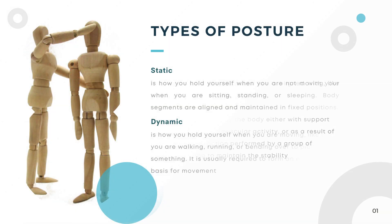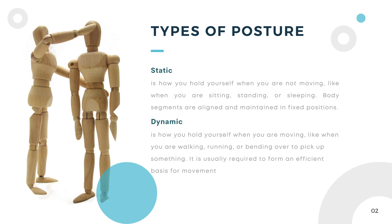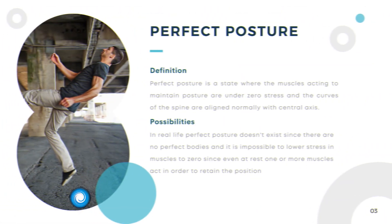Posture can be assumed in any position: sitting, standing, or even during movement. This takes us to our next topic — types of posture. Posture is of two types: static and dynamic. Static posture is how you hold yourself when you are not moving, like when you are sitting, standing, or sleeping — body segments are aligned and maintained in fixed positions. Dynamic posture is how you hold yourself when you are moving, like when you are walking, running, or bending over to pick up something. It is usually required to form an efficient basis for movement.